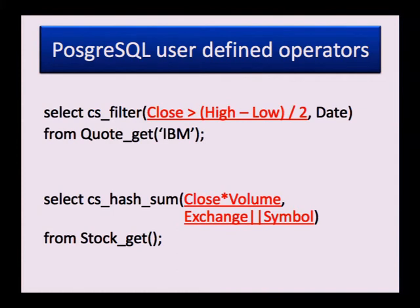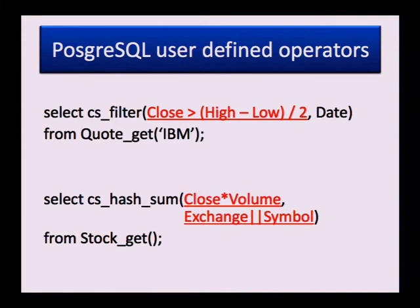Postgres makes it possible to define user-defined operators. This feature is widely used by IMCS to make operations with time series look like normal SQL expressions. Here, 'close', 'high', and 'low' are all time series, and greater-than, minus, and divide are operators for time series — it looks like a normal SQL expression. Another example is aggregation — it calculates so-called volume-adjusted price. There is also a concatenation operator which concatenates elements of two time series and is used as a group-by key.